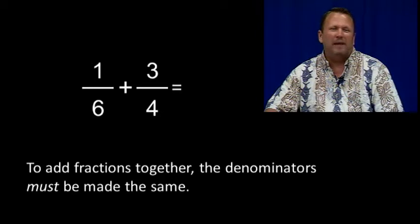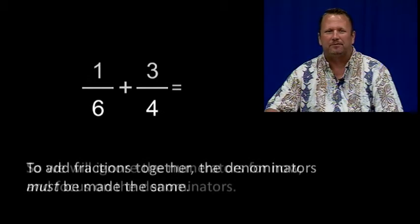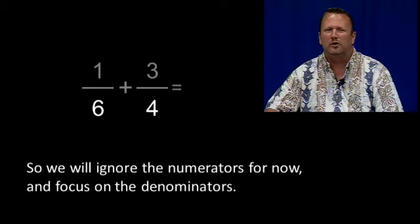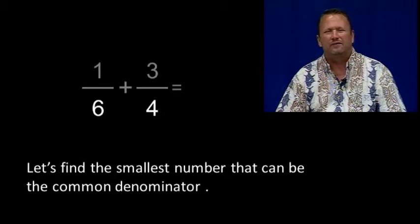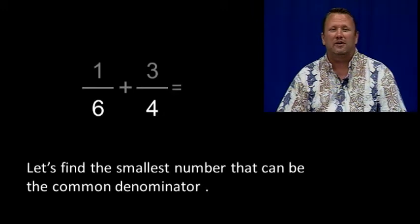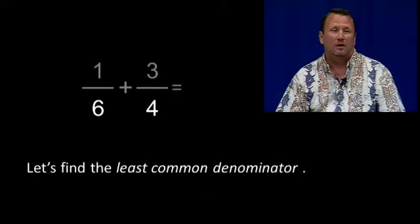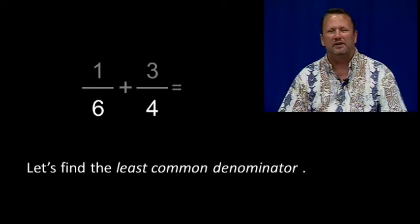To add fractions together, the denominators must be made the same. So we will ignore the numerators for now and focus on the denominators. Let's find the smallest number that can be the common denominator — the least common denominator.